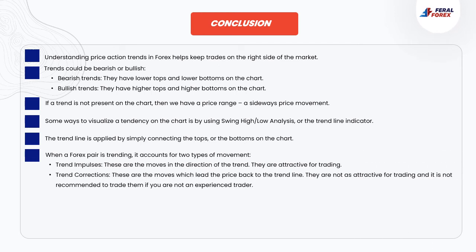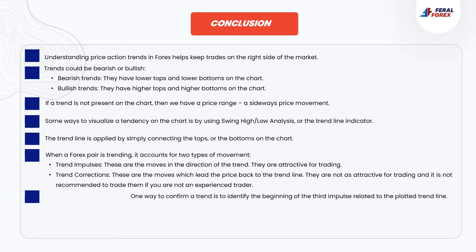When a Forex pair is trending, it accounts for two types of movement. Trend impulses are the moves in the direction of the trend — they are attractive for trading. Trend corrections are the moves which lead the price back to the trend line — they are not as attractive for trading and it is not recommended to trade them if you are not an experienced trader. One way to confirm a trend is to identify the beginning of the third impulse related to the plotted trend line.